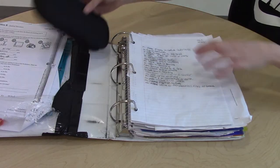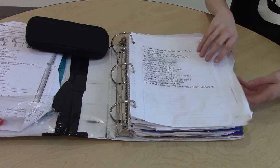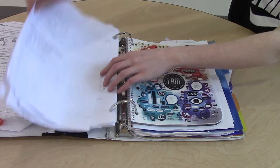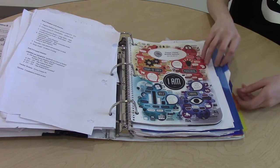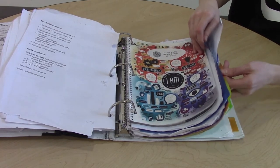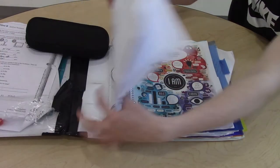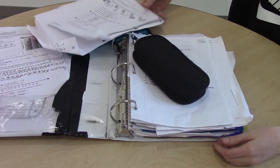In this poorly organized binder, the pencil pouch is not in front of the planner. Random papers are in front of the planner. There are only four tab dividers, and there's lots of loose papers.